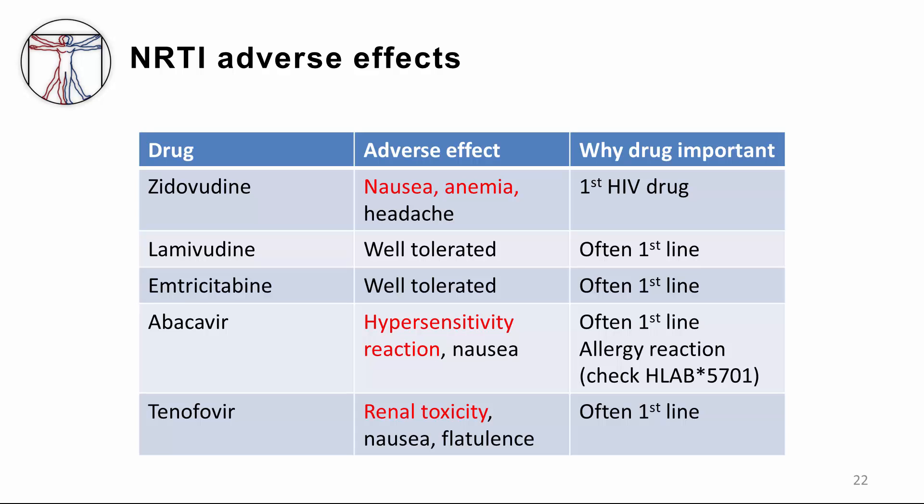Here are some classic adverse effects for various members of the NRTI class. Zidovudine, or AZT, was the first HIV drug developed and is known for nausea and anemia — particularly anemia. I've seen many patients who needed blood transfusions because of AZT. Lamivudine, or 3TC, is very well-tolerated and is often first-line. Emtricitabine is very similar to lamivudine in that regard.